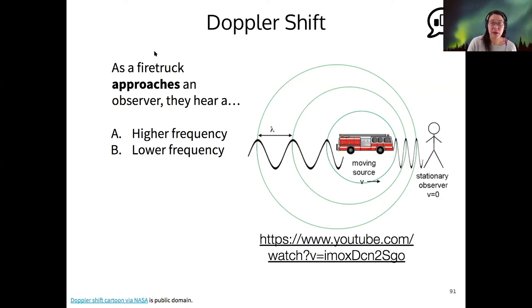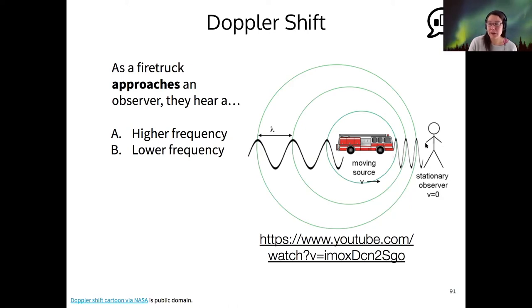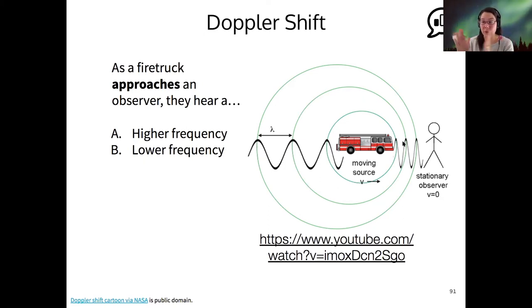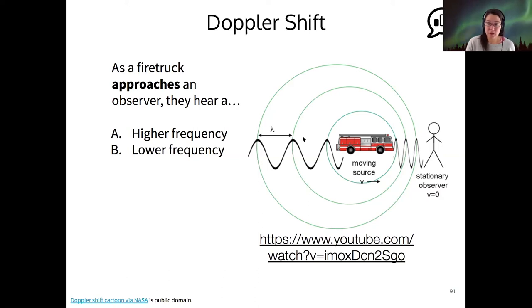In the image here, I've got a firetruck as our moving source. If you're standing on the sidewalk as a stationary observer, as the firetruck comes towards you, it's actually pressing the waves that it emits closer and closer together because of its motion. That causes the wavelengths to become shorter in front and longer behind.